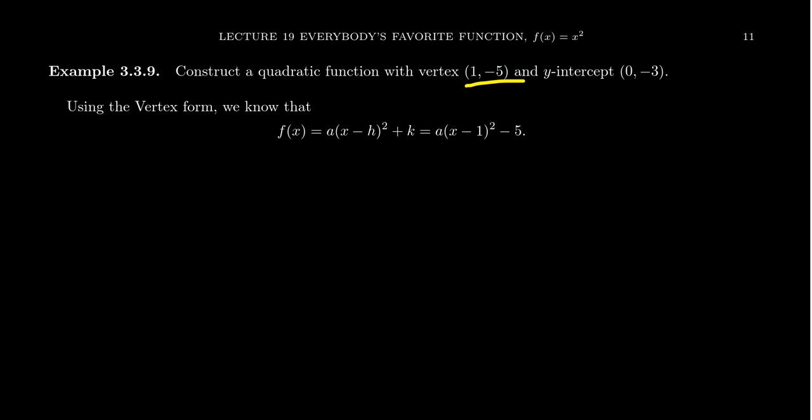Now having the vertex is the most valuable point on a parabola because given the vertex form f of x equals a times x minus h squared plus k, we can fill in the two parameters h and k immediately by using 1 for h and negative 5 for k. This gives us the formula f of x equals a times x minus 1 squared minus 5.